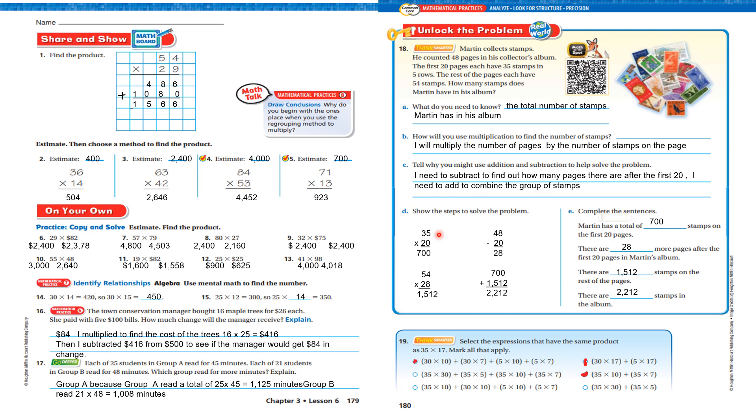How to solve this? 35 times 20, and then 54 times 28. 48 minus 20 is 28. I add them together. Complete the sentence. Martin had a total of 700 stamps on the first 20 pages. There are 28 more pages after the first 20 pages. There are 1,512 stamps on the rest of the pages. And there are 2,112 stamps in the album.